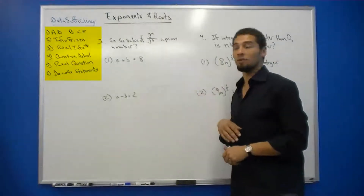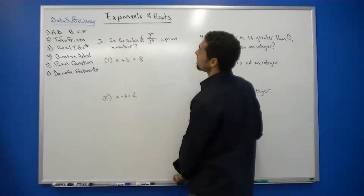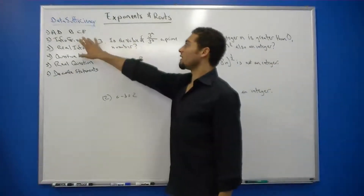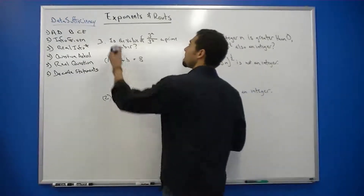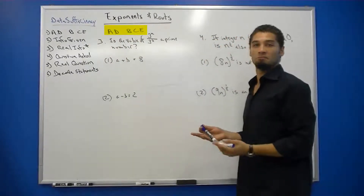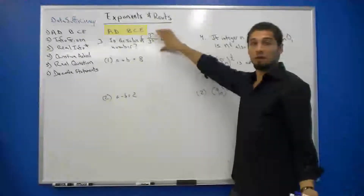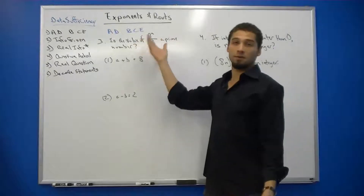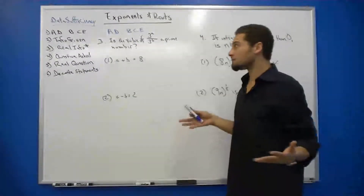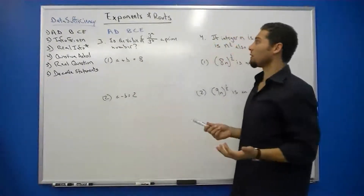Let's go ahead and take a look at our first example. Question three: is the value of 3A over 3B a prime number? We do not have any info given. We put our answer choices up there — A, D, B, C, E. Consequently, our real information is simply recognizing that we're dealing with exponents. The question being asked is: is the value of 3A over 3B a prime number?